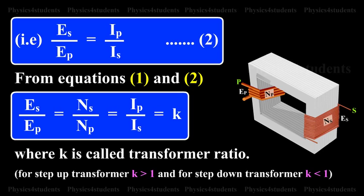From equations one and two: ES/EP = NS/NP = IP/IS = K, where K is called the transformer ratio. For a step-up transformer, K is greater than 1, and for a step-down transformer, K is less than 1.